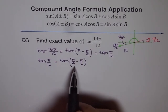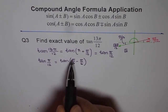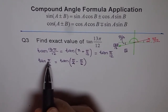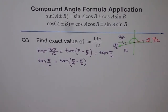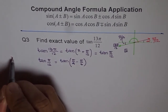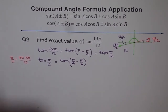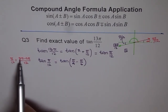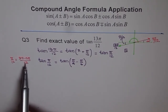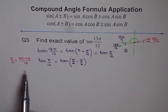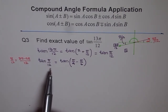Let me show the rough work here. π by 12 can be written as 3π minus 2π over 12. So 3π over 12 simplifies to π by 4, and 2π over 12 simplifies to π by 6. That is how we translate π by 12 into π by 4 minus π by 6. This has the additional advantage of giving us a difference of two angles that form special triangles.